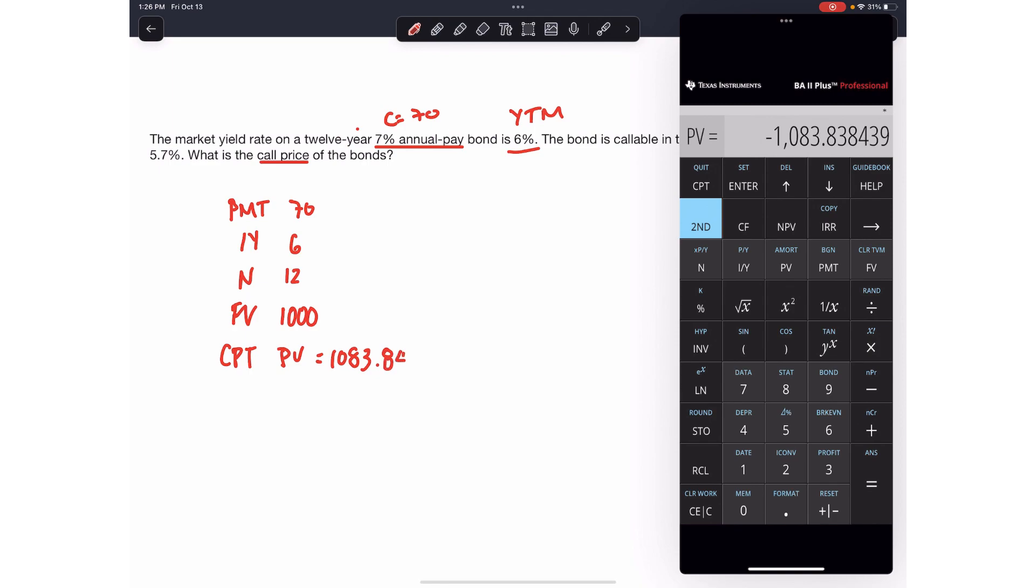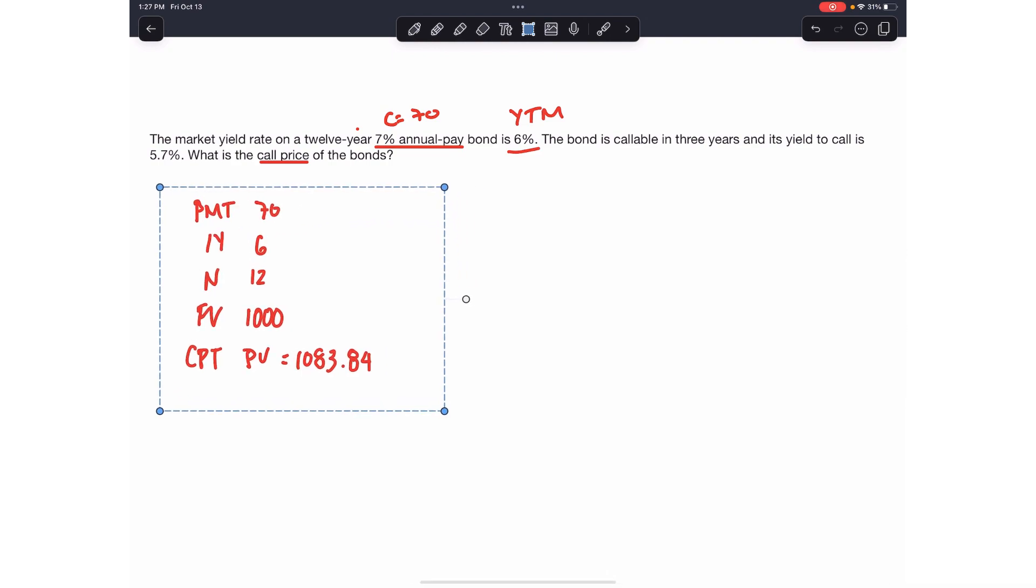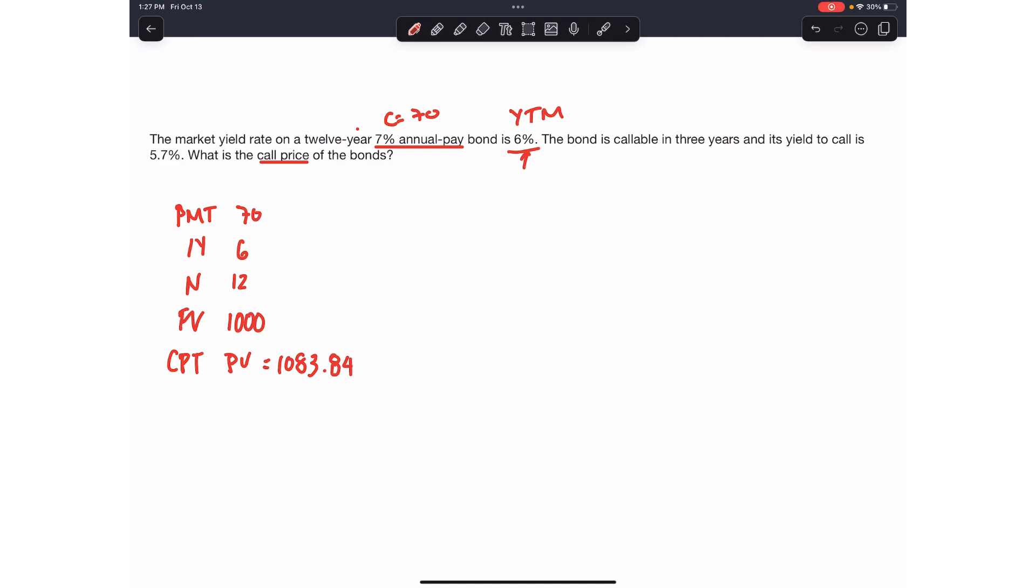So we know what this means, right? If an investor bought the bond today for $1,083 and they kept it until maturity, they would earn 6% per year. That's the yield to maturity, the return you make every year if you keep the bond until maturity.